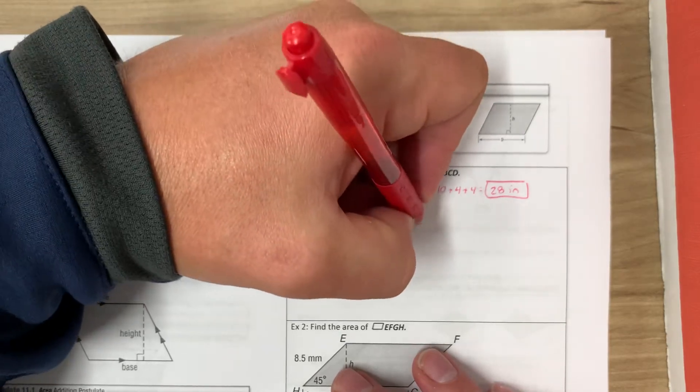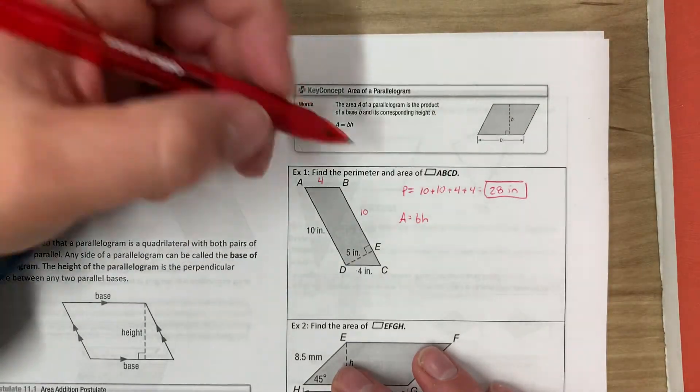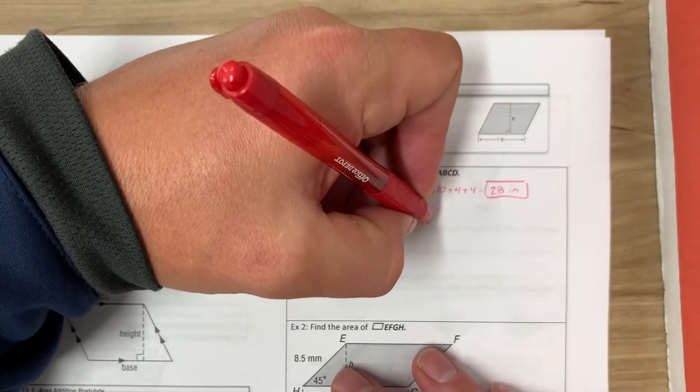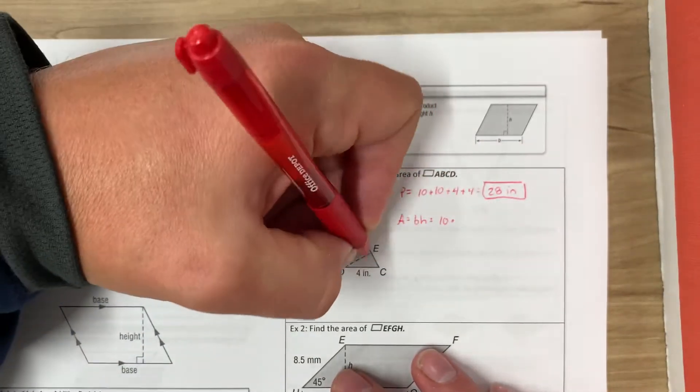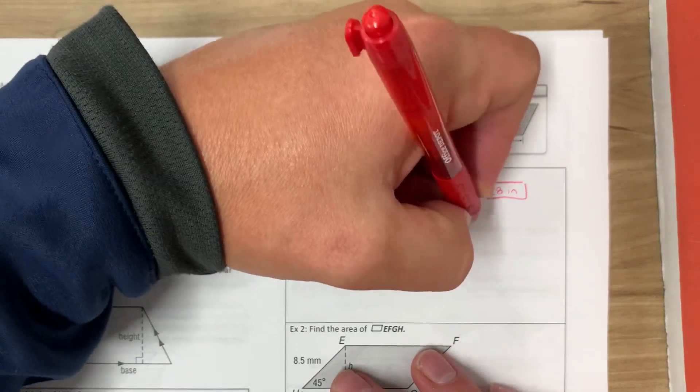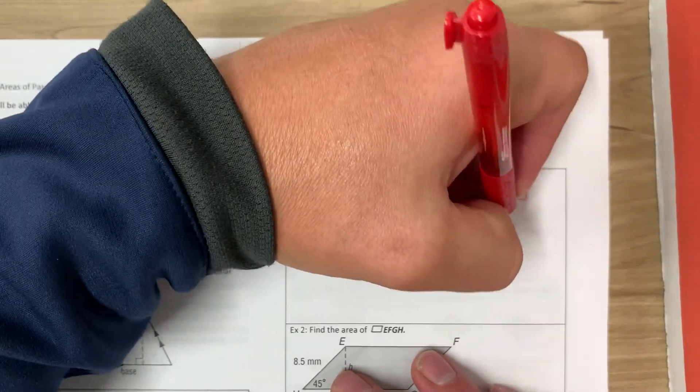Area is base times height. So the base is 10, and the height is this 5 right here. So it's 50 inches squared.